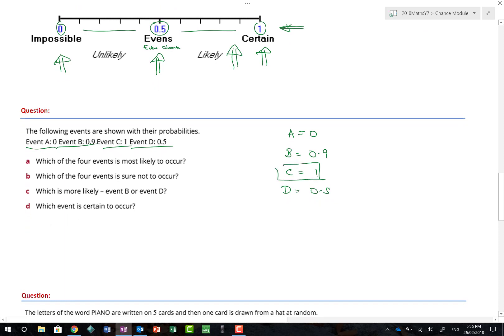Which of the four events is sure not to occur, i.e. is impossible? Well, an event of 0 means it's fairly impossible. That's A. Which is more likely, event B or event D? Event B is at 0.9. Event D is at 0.5. Well, I think the closer it is to 1, the more likely it's going to be. And 0.9 is certainly closer than 0.5. So that would give me B. And which event is certain to occur is actually C.